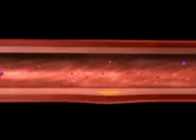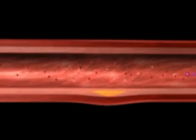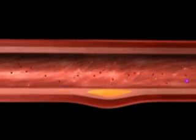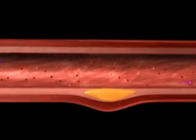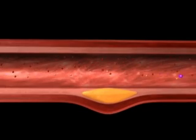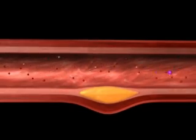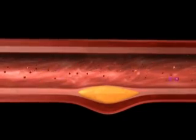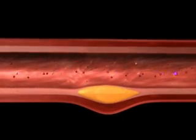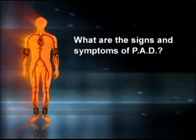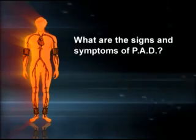Peripheral arterial disease, or PAD, refers to blockages in arteries that are away from the heart. These blockages are typically fatty build-up or atherosclerosis, the same process that can involve a blockage in a heart artery. When we hear the term PAD, it is generally thought of as referring to lower extremity PAD, which involves blockages in the arteries in the leg.